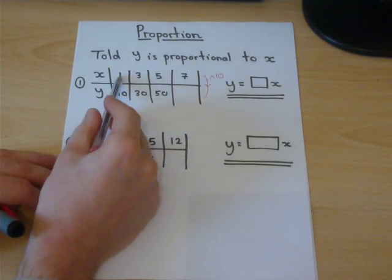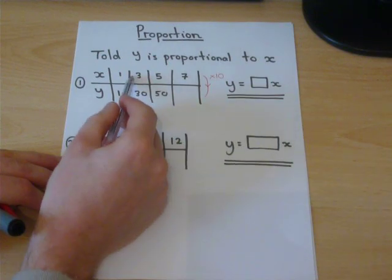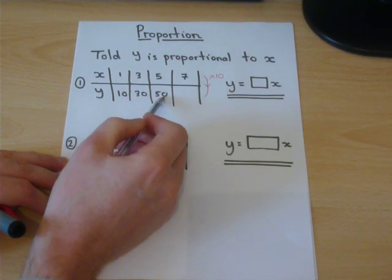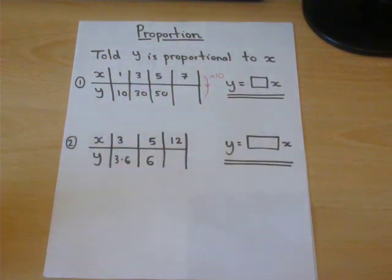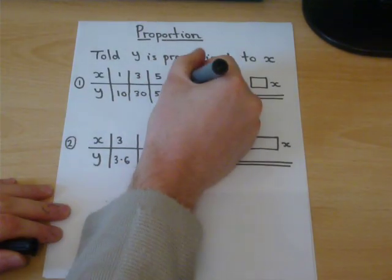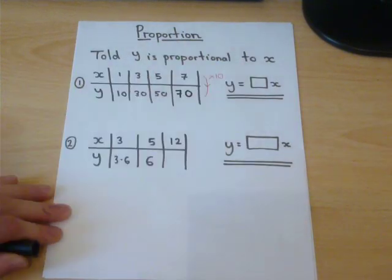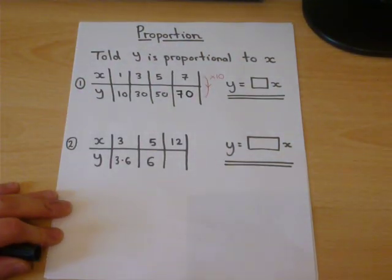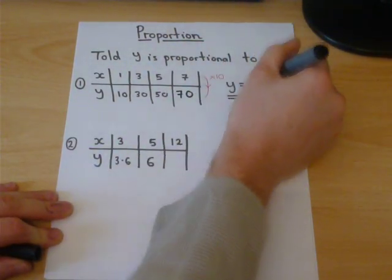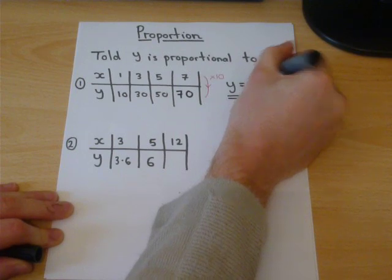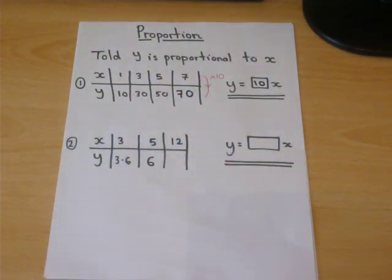10 divided by 1 is 10. 30 divided by 3 is 10. 50 divided by 5 is 10. This must therefore be 70 times by 10. And the rule is that to get to y, we do 10 lots of x.